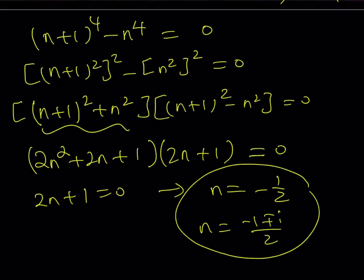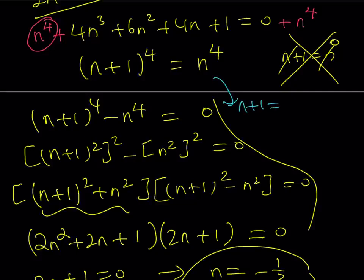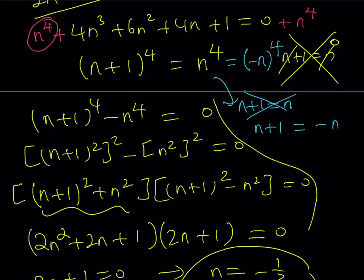This is the 2a approach. The 2b approach - to be or not to be - is slightly different. Since the fourth powers of two things are equal, we have two options. Either they are equal, which is nonsense because n + 1 never equals n, or one equals the opposite of the other because you can write this as -n⁴ thanks to the even power. From here you get 2n = -1, so n = -1/2.